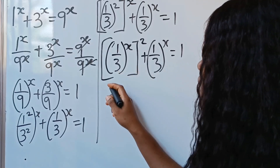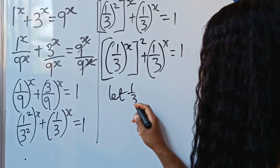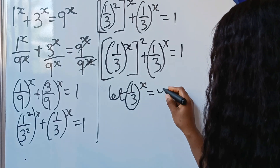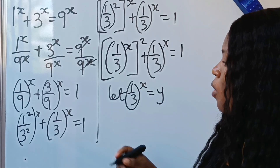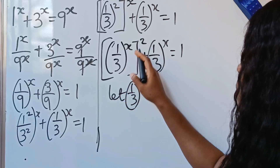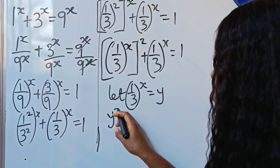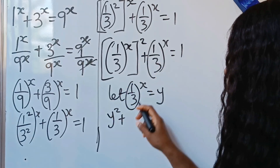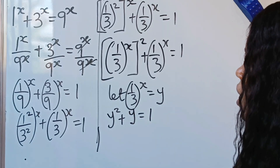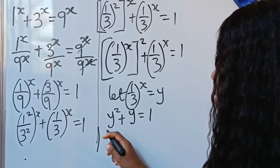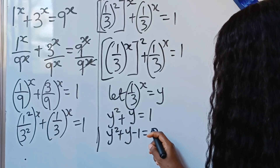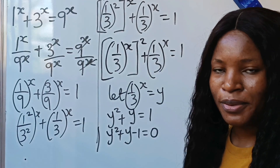So I will write 1 over 3 to the power of x, everything squared, plus 1 over 3 to the power of x, is equal to 1. I'm going to simplify this by letting 1 over 3 to the power of x equal y. Once I make that substitution, this becomes y squared plus y is equal to 1.